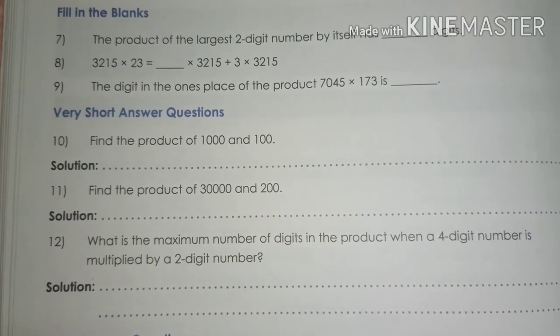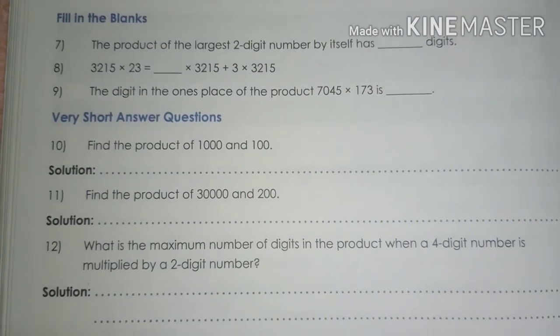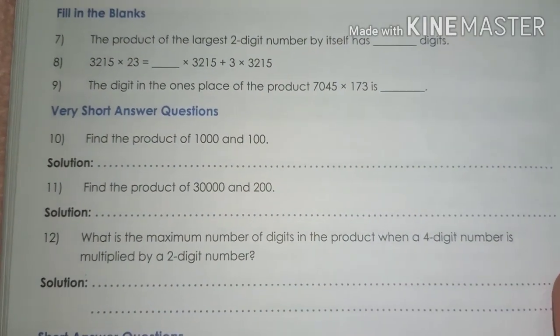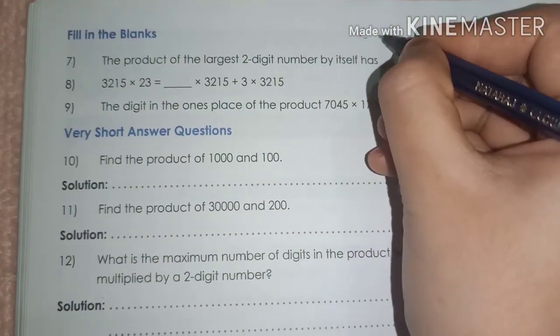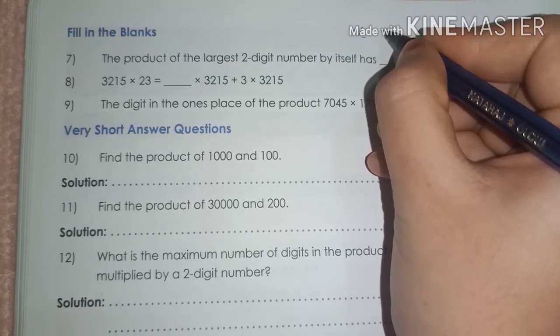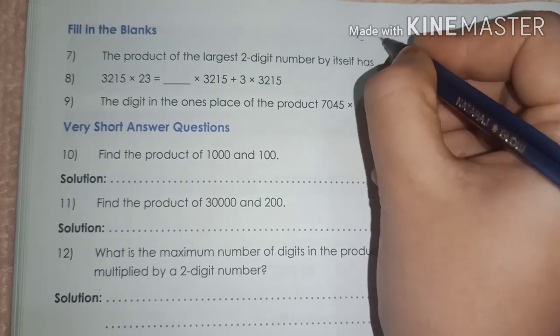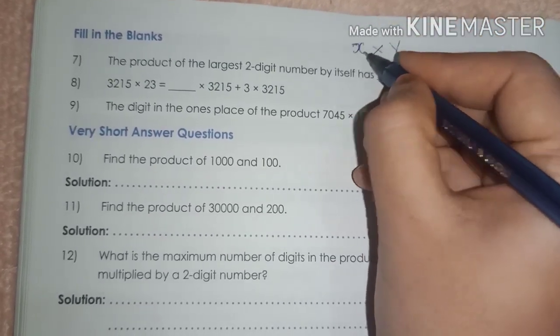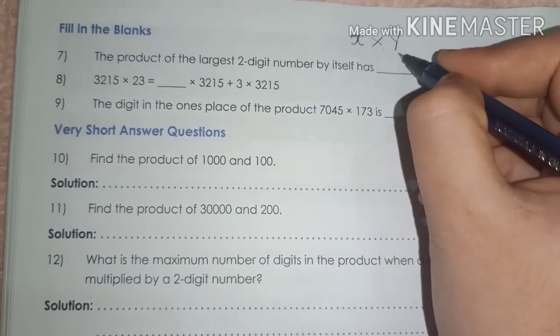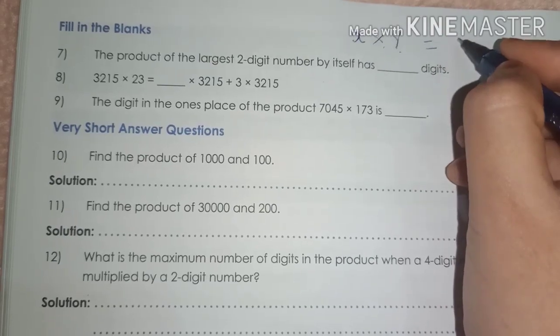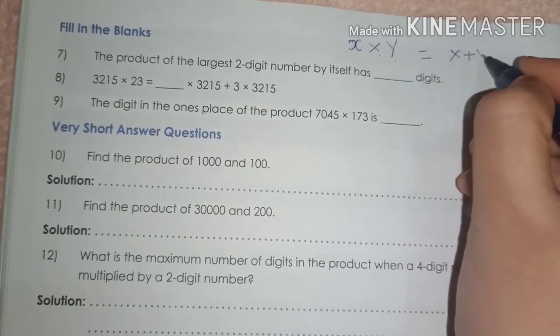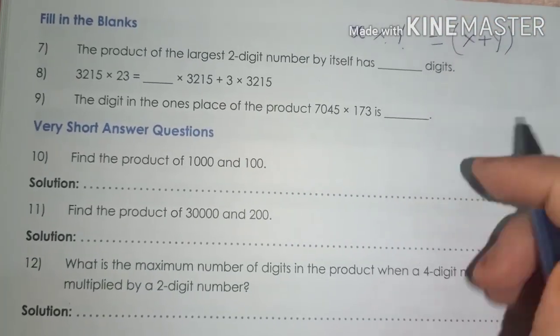We have learned that if an x-digit number is multiplied by a y-digit number, then the product is not more than a x plus y-digit number. This is the general rule.